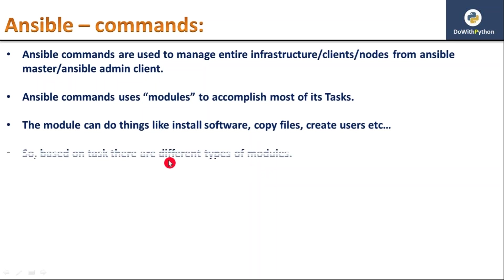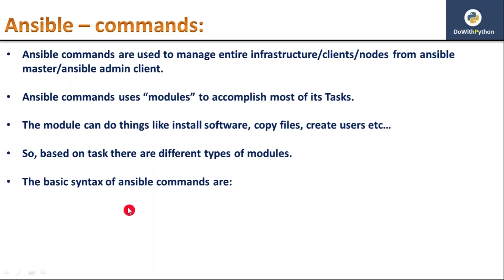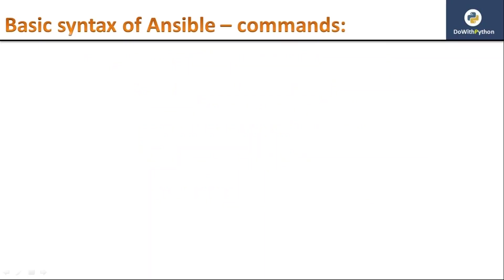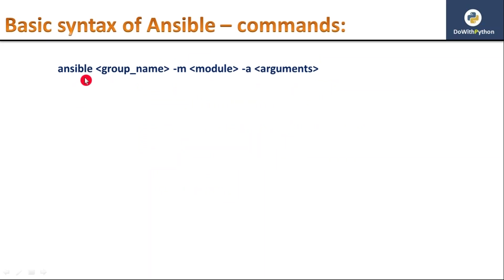The basic syntax for any Ansible command is: ansible [group name] -m [module] -a [arguments]. Here -m indicates the module option and -a indicates arguments. The group name comes from your inventory or host file, you select the module based on your task, and arguments are optional — sometimes required, sometimes not.